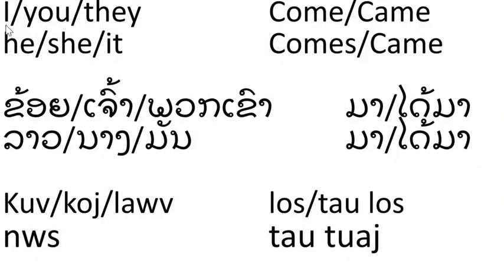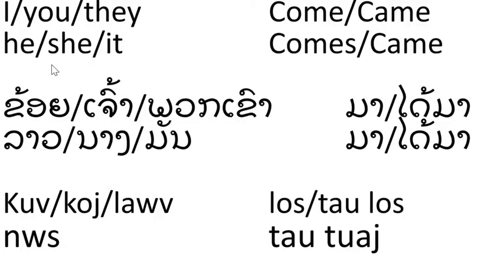And in English you have: I come, you come, they come, he comes, she comes, it comes. You know that you have an S with the present tense. And the past tense is came — I came, you came, they came, he came, she came, it came.